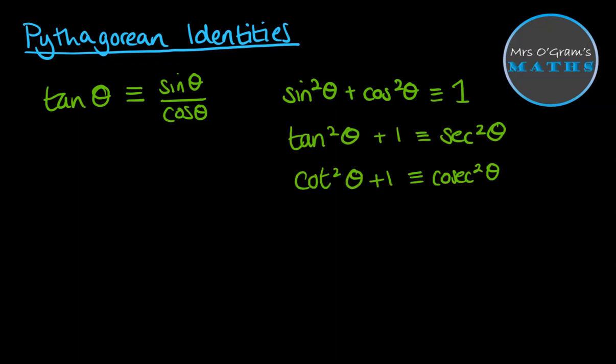And with a little bit further manipulation, we also get these other two results: tan squared theta plus 1 is sec squared theta, cot squared theta plus 1 is cosec squared theta. And those are on your level 3 formula sheet.